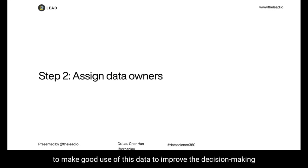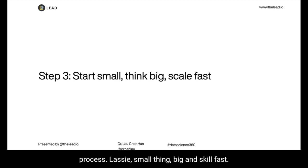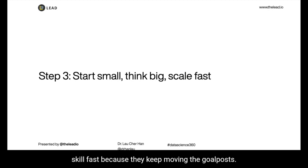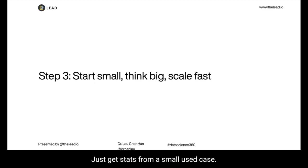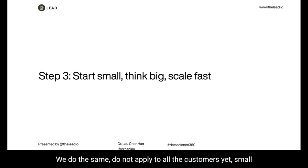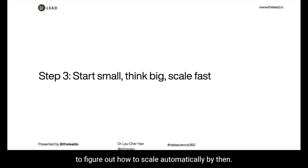Lastly, start small, think big, and scale fast. I've seen many failed projects that did not follow these steps — some start big and keep shrinking scope, eventually unable to execute or scale because they keep moving the goalposts. Don't think of using text data from every department or the whole company just yet. Start from a small use case — ideally at the department level — then think of how to expand it to a larger user base, but don't rush. Even for customers, do the same: find a small group, test with them first, and often you'll figure out how to scale automatically from there.